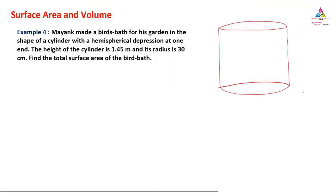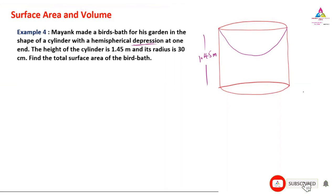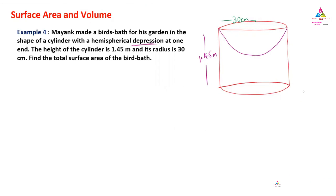There is a hemispherical bowl structure at the top — that is called the hemispherical depression. At one end the height of the cylinder is 1.45 meters, and the radius given is 30 centimeters.